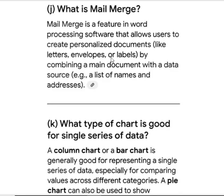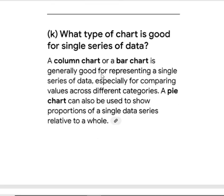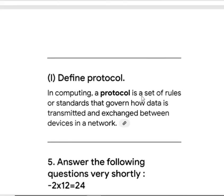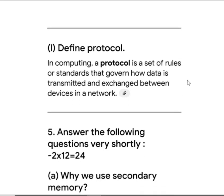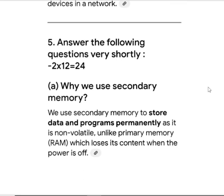Mail merge works by combining a main document with a data source. What type of chart is good for a single series of data? A column chart or bar chart. Define protocol: in computing, a protocol is the set of rules or standards that govern how data is transmitted and exchanged between devices in a network.